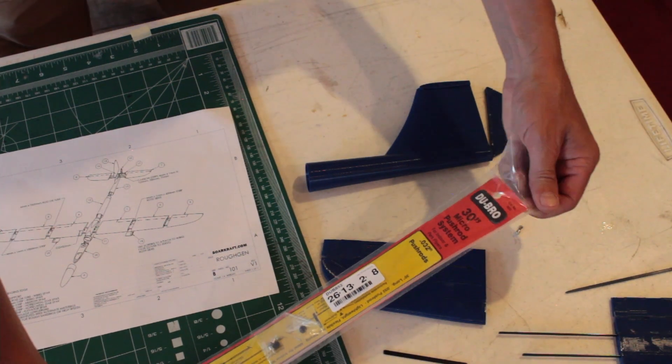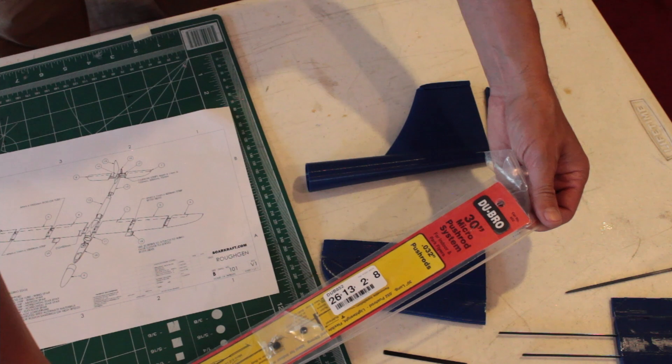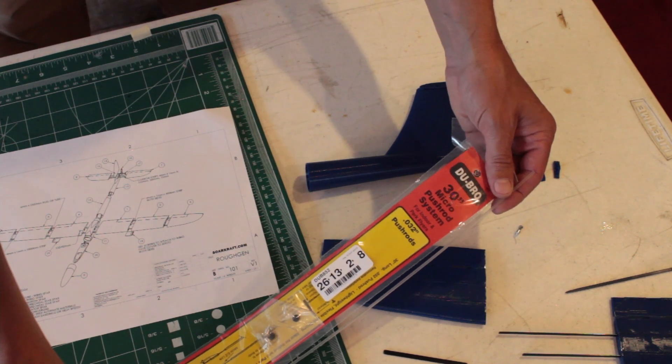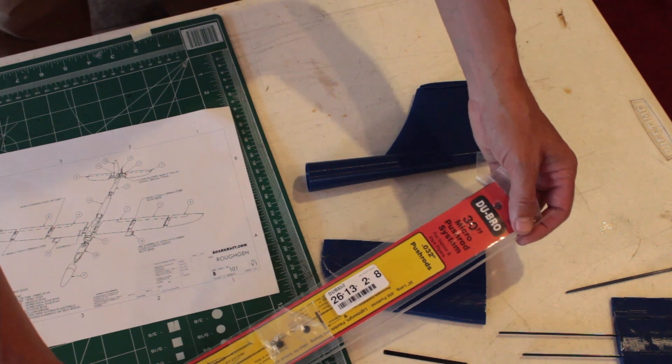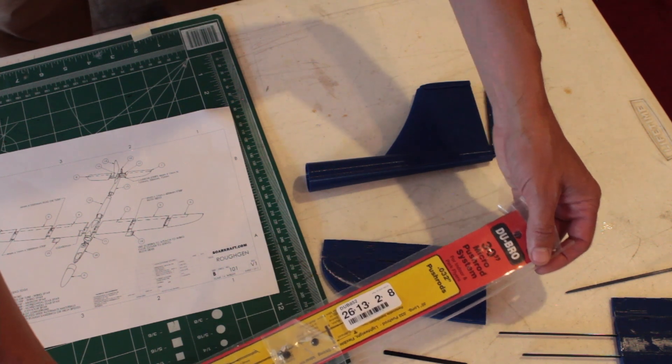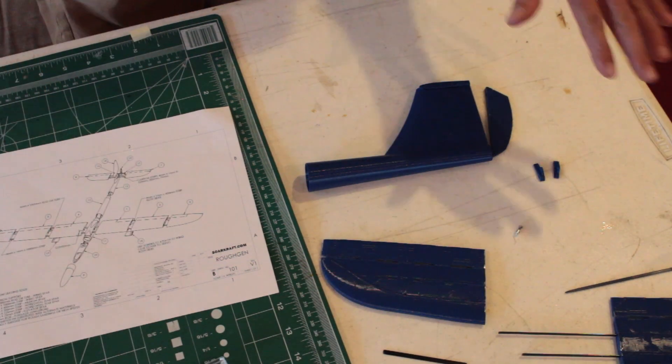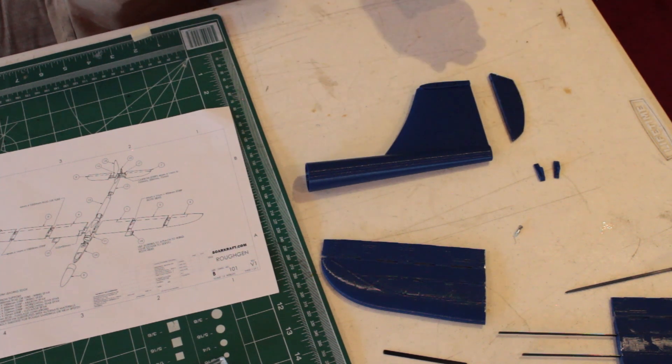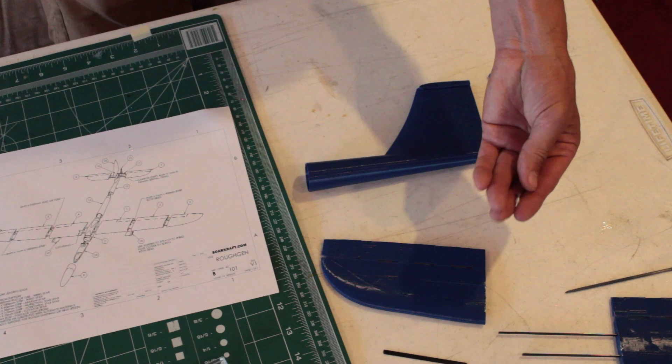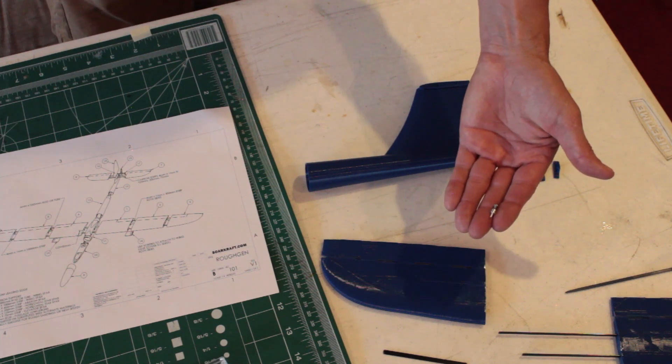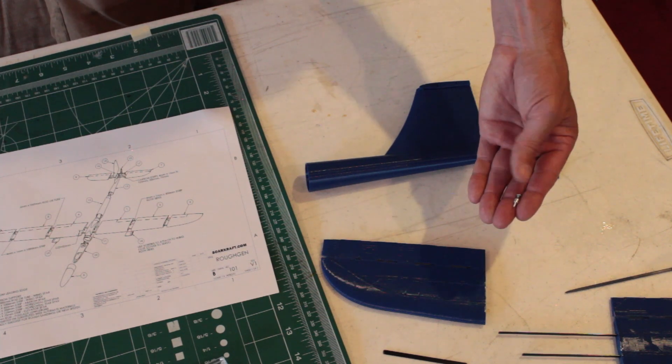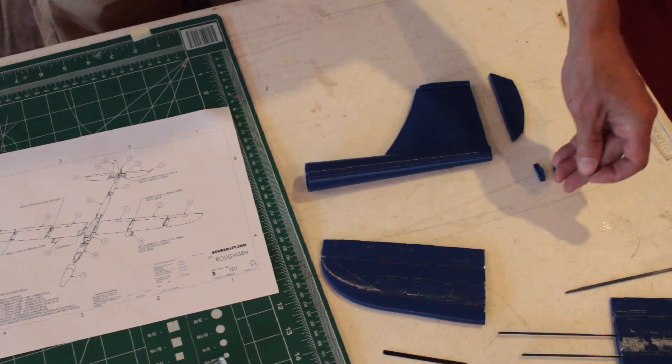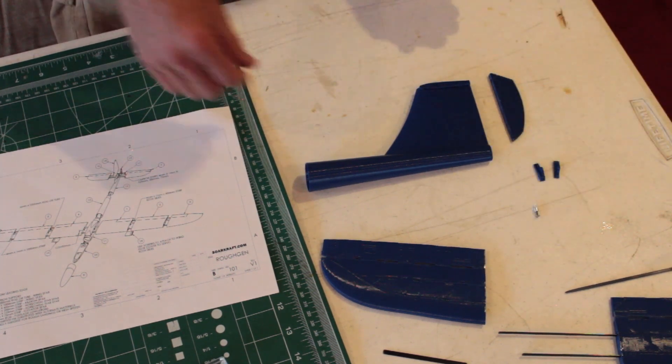I'm using this particular one, the 852 - it's the 30 inch micro push rod with the 032 push rod. It's a little bit thinner, makes the bend a little easier, and then the easy connector makes it really nice and easy to adjust the final position of the elevator from the outside of the plane.